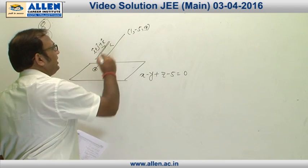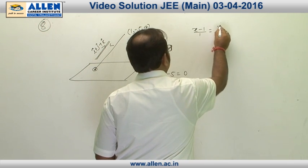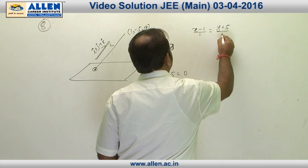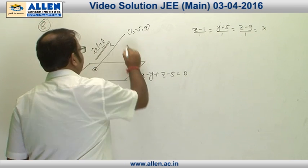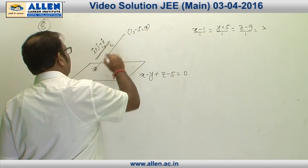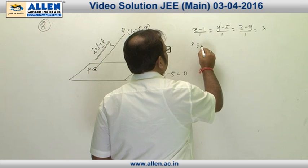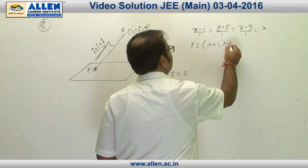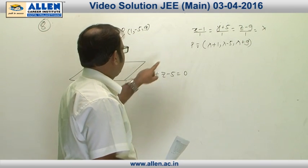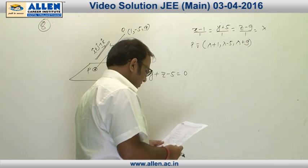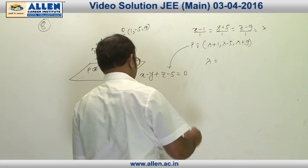We write the equation of line L through point (1, -5, 9) parallel to (1, 1, 1): (x - 1)/1 = (y + 5)/1 = (z - 9)/1 = λ. Any point on this line is P = (λ + 1, λ - 5, λ + 9). To find λ, we substitute P into the plane equation.